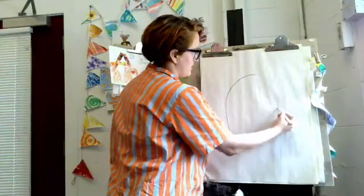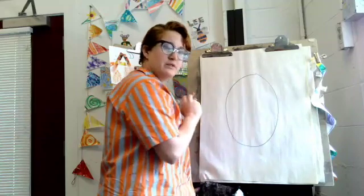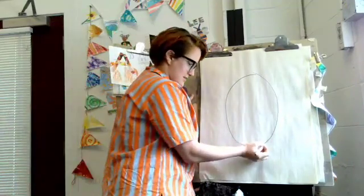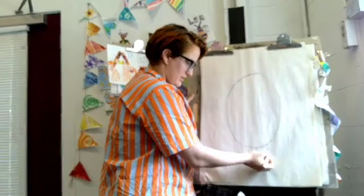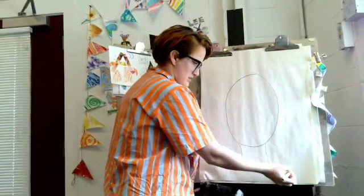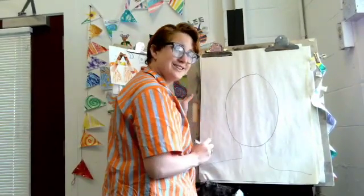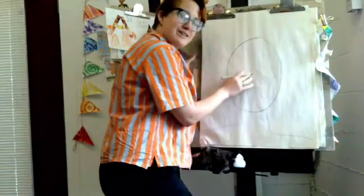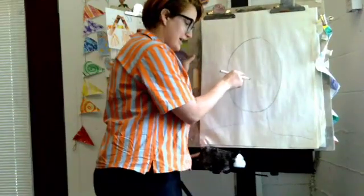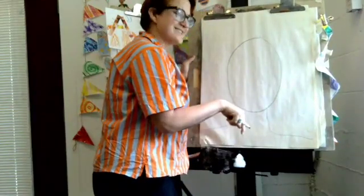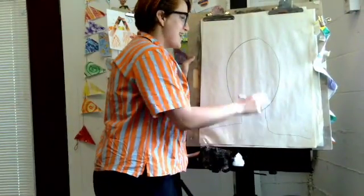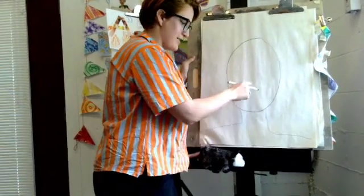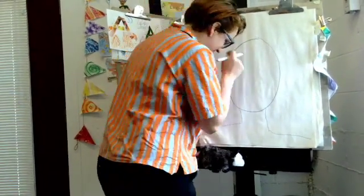And there we have a big oval, and neck, and some shoulders. Now — head, shoulders, knees and toes, knees and toes, eyes and ears and mouth and nose — let's go!